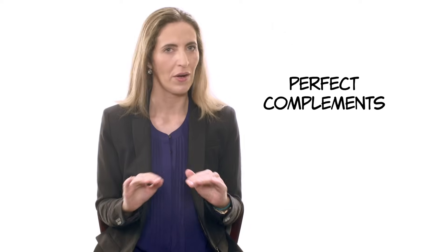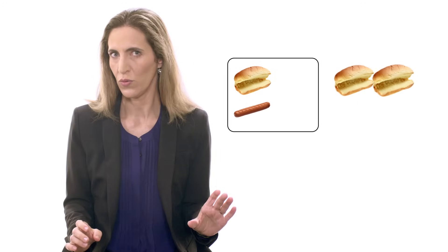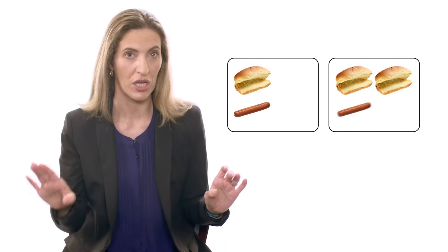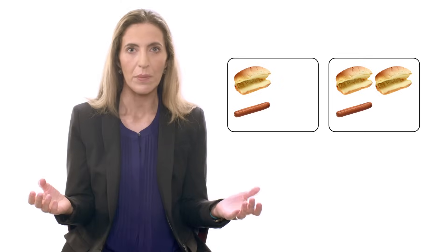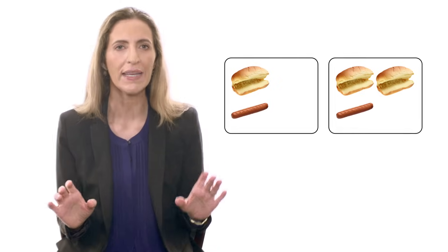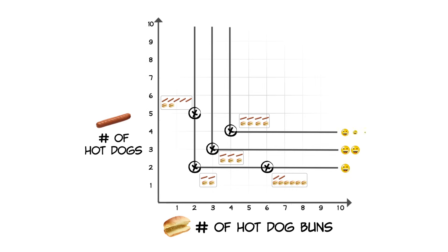Perfect complements are another extreme case. Suppose you're eating hot dogs — you want one hot dog bun for every hot dog. If I give you two hot dog buns but just one hot dog, you will not be better off because you like your hot dogs with hot dog buns. In this case, your indifference curves will look like right angles.